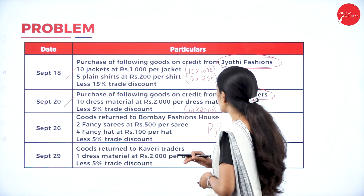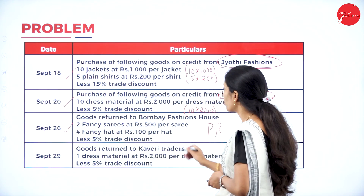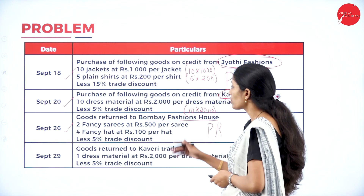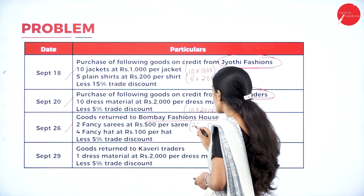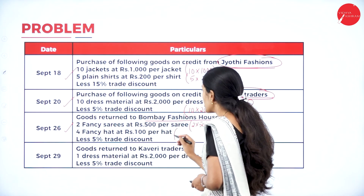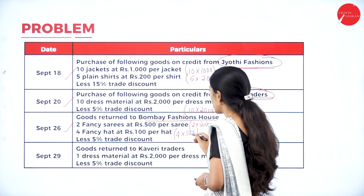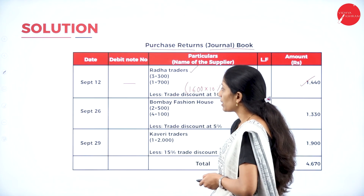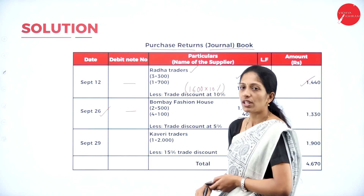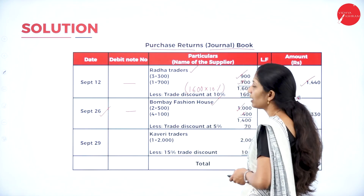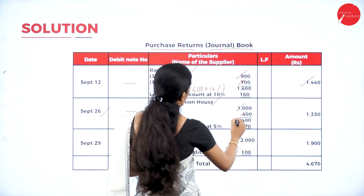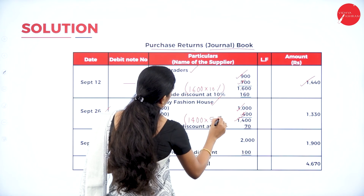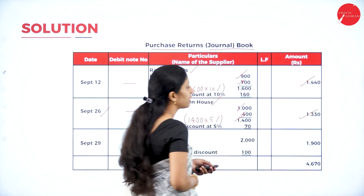Next purchase returns entry — September 26th, goods returned to Bombay Fashion House, no debit note number. Calculate: 2 fancy saris × Rs. 500 = Rs. 1,000; 4 fancy hats × Rs. 100 = Rs. 400; total Rs. 1,400. Less trade discount at 5%: 1,400 × 5% = Rs. 70. So 1,400 − 70 = Rs. 1,330.